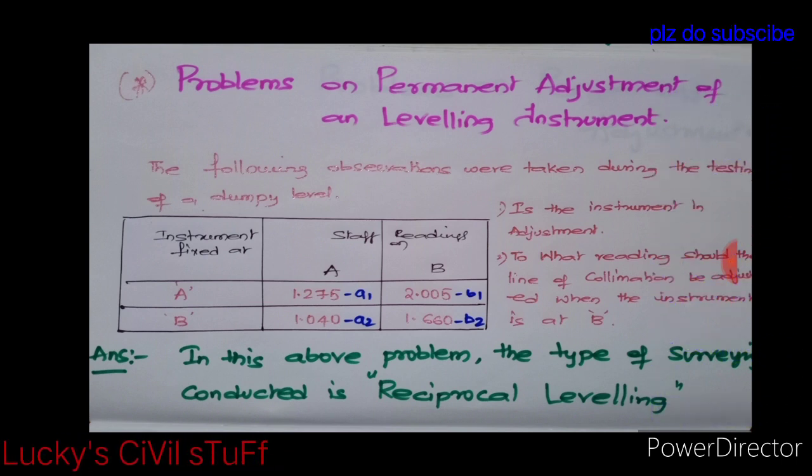The instrument was set up near to peg A and near to peg B. When the instrument was fixed at A, the staff readings on A are 1.275 and on B are 2.005 respectively.